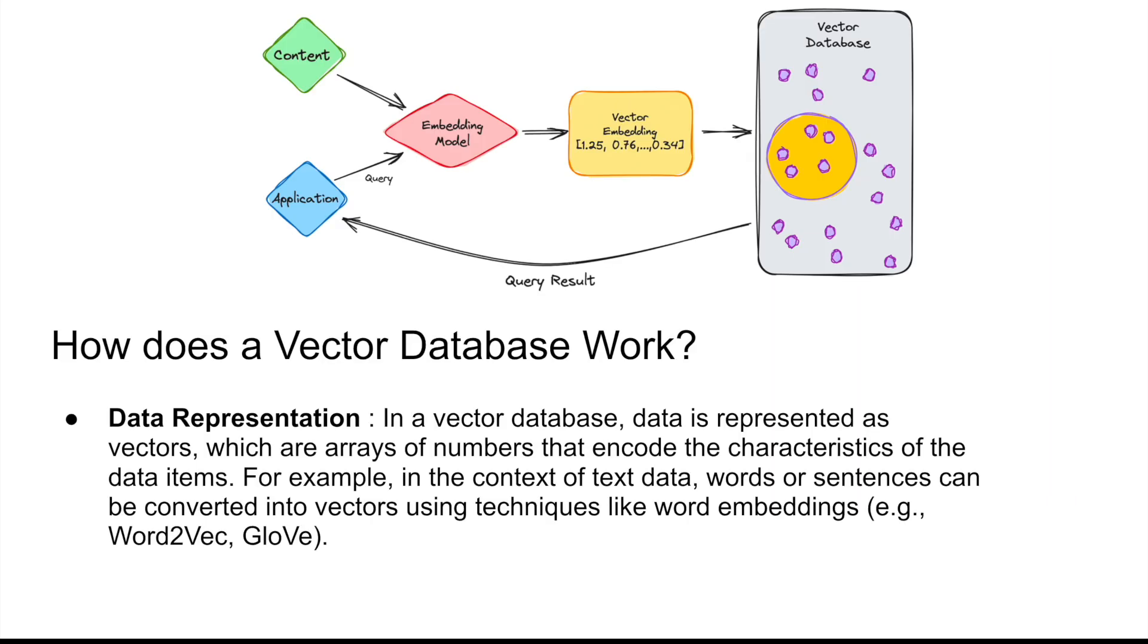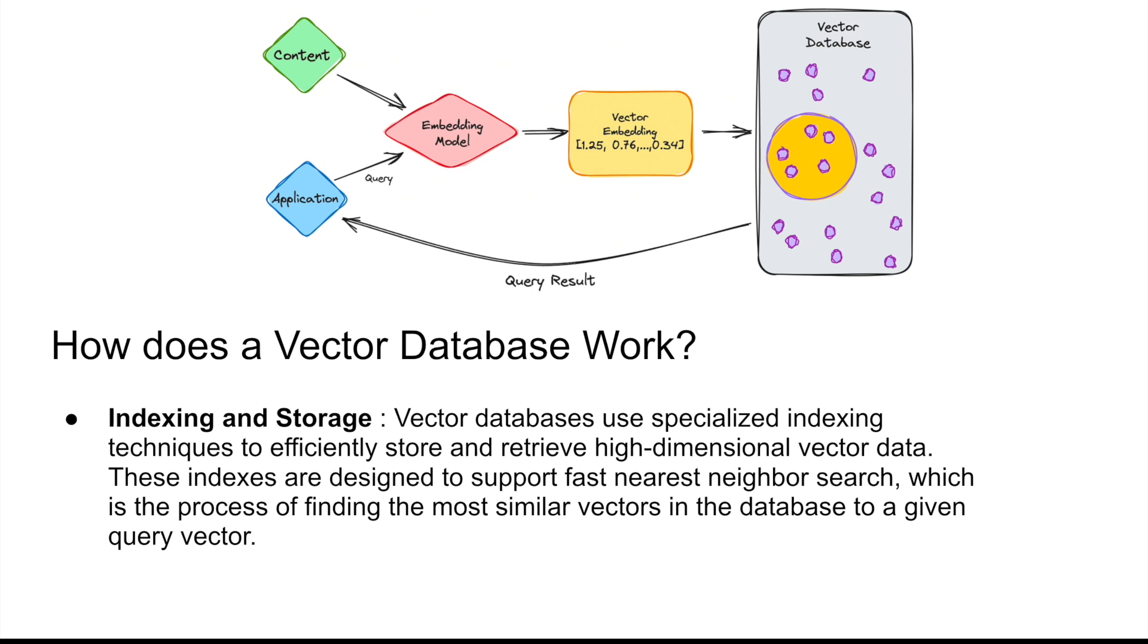Now I will take you through the process of how a vector database works. In the context of text data, words or sentences can be converted into numbers. VectorDBs use specialized techniques to efficiently store and retrieve high dimensional vector data. These indexes are designed in such a way that you can search quickly through multiple vectors and retrieve the result that you are looking for. Examples of indexing techniques include tree based structures like KD tree, ball tree, etc. Then there are hashing based methods as well, and then there are partition based methods as well.